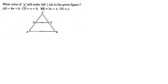What value of x will make DE parallel to AB in the given figure, where AD is 8x plus 9, CD equals x plus 3, CB equals 3x plus 4, and CE equals x? In triangle ABC, D and E are points on a line intersecting sides AC and BC.